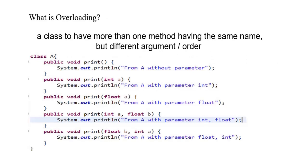Overloading is when a class has more than one method with the same name but different arguments or their order. If you are not aware about this, you can have a look. We have a class A and we have various print methods in this, but all the print methods either have different order or different arguments.